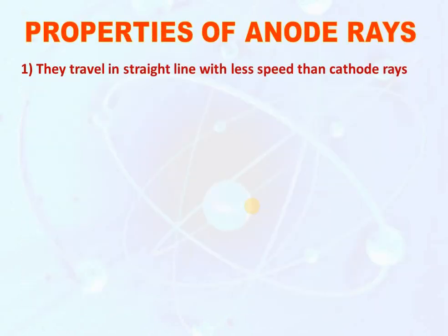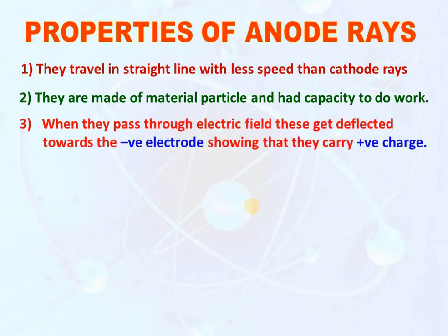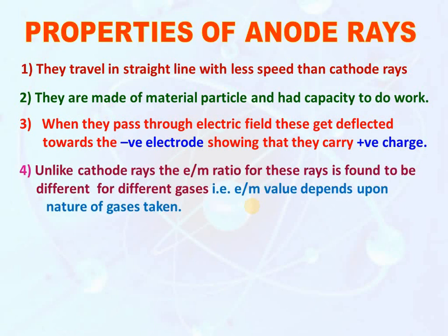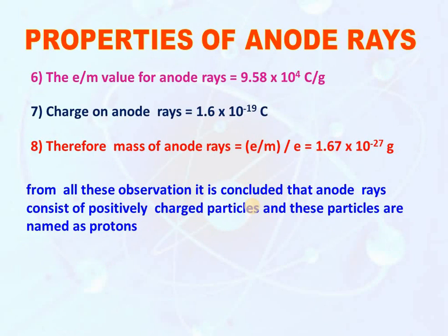Properties of anode rays: They travel in straight lines with less speed than cathode rays. They are made of material particles and have the capacity to do work. When passed through an electric field they get deflected towards the negative electrode, showing that they carry positive charge. Unlike cathode rays, the e/m ratio for anode rays is found to be different for different gases — the e/m value depends upon the nature of the gas taken. The e/m ratio for anode rays is not constant and is smaller than that of electrons. The e/m value for anode rays is 9.58 into 10 to the power 4 coulomb per gram. The charge on anode rays is 1.6 into 10 to the power minus 19 coulomb — same as that of electrons but positively charged. The mass of the anode rays is 1.67 into 10 to the power minus 19 grams.